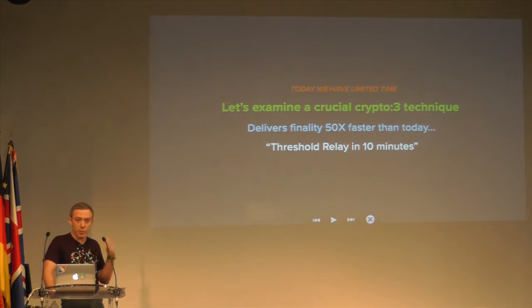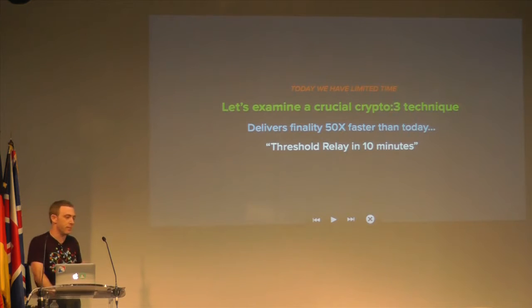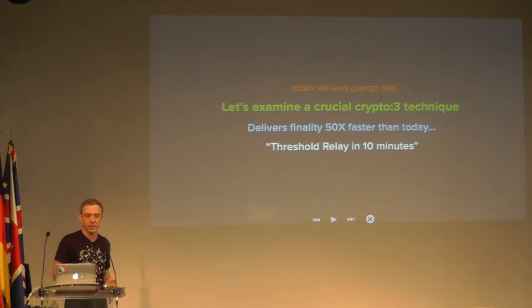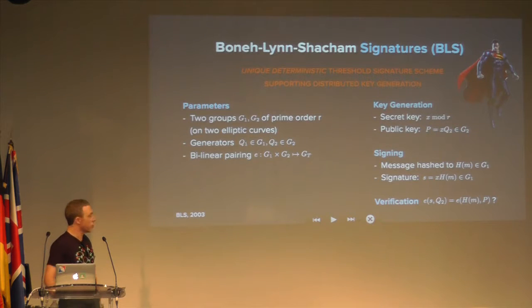Threshold Relay also removes Poisson distribution, so the amount of computation the network can handle increases by a similar amount too.